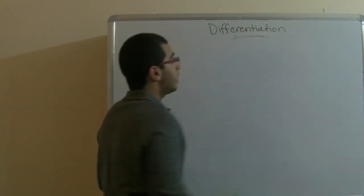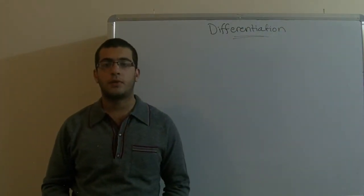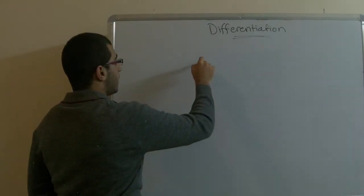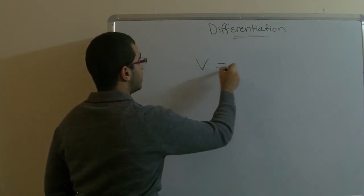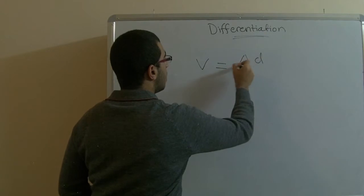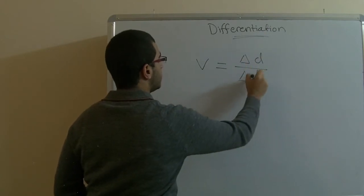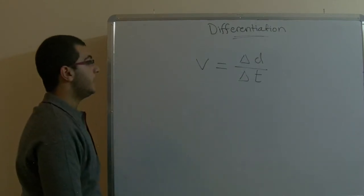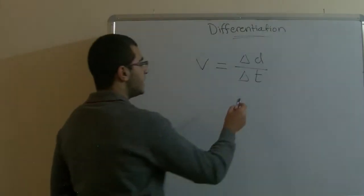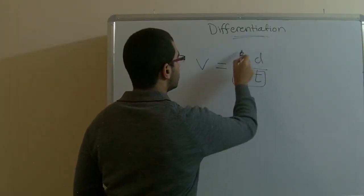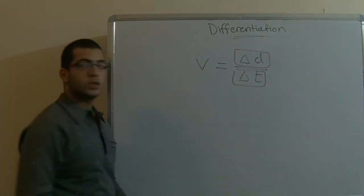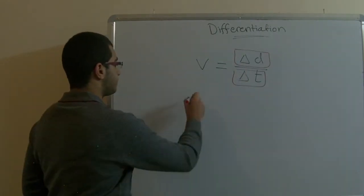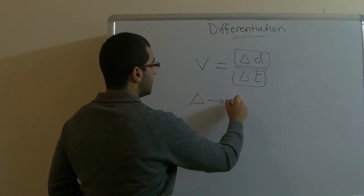Before diving into differentiation, I want to refer to something in physics. Of course all of us know that velocity equals the variation of distance over the variation in time. In this equation we have two quantities divided by each other, and we have this delta here. The delta refers to the variation.